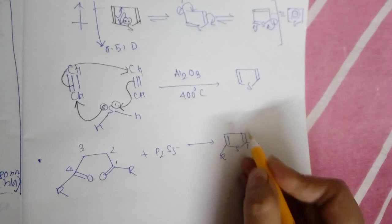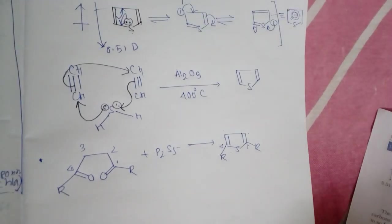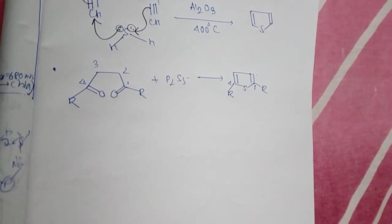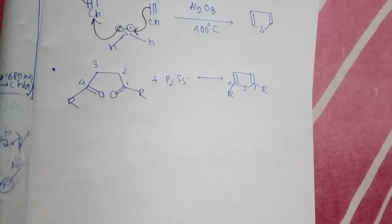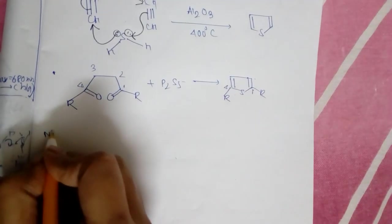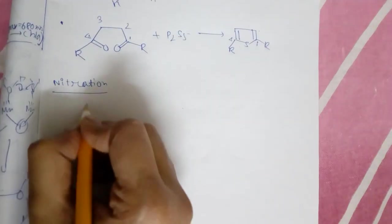1,4-diketo compound in presence of P2S5 will form thiophene which is substituted thiophene in the 2, 3, and 4 position. From succinate, thiophene can be prepared. As we've seen, thiophene in the ring is electron rich, electron dense than benzene, so it will be more reactive than benzene towards electrophilic reaction.